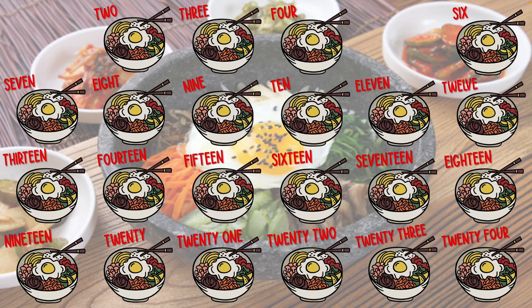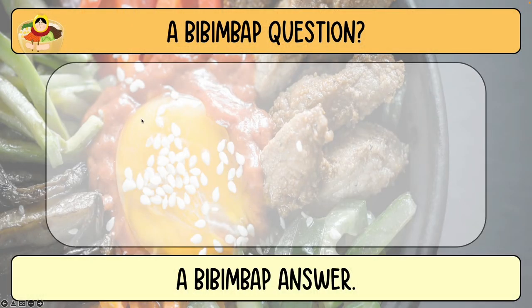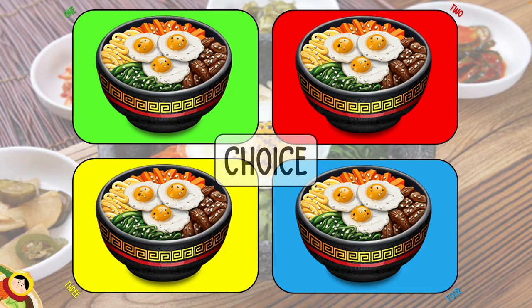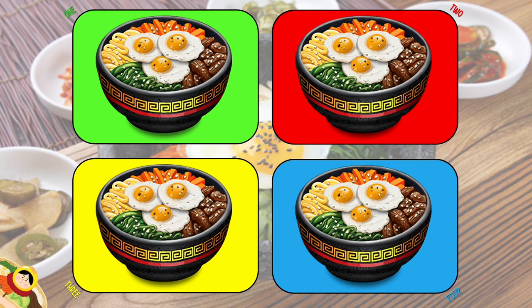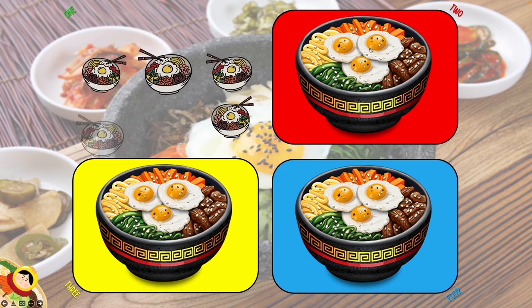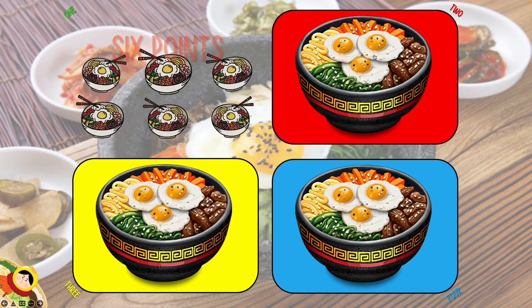Next, I'm going to choose question number eight. We have a question, we have an answer. Now number eight — this is the choice slide. There are five choice slides in this game. All you need to do is just click on the bowl of bibimbap to reveal whatever points there would be. Students can choose one, two, three, or four — a light green, red, yellow, or sky blue. So number one here, we've got six points like that.